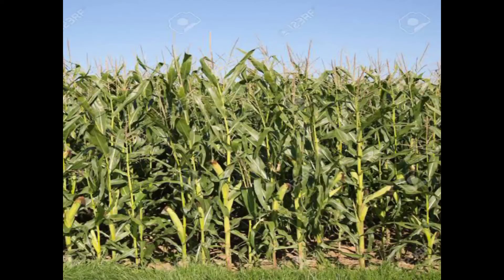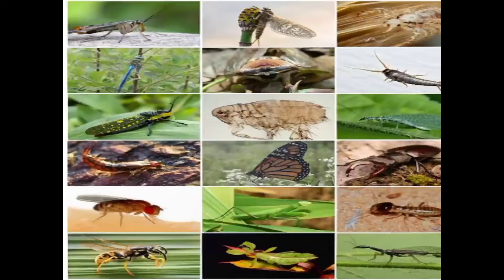So they destroy the crops by eating the fruits and eating the important parts of the plants. These insects thrive in their atmosphere and they destroy the crops very easily.